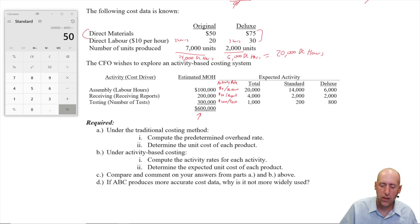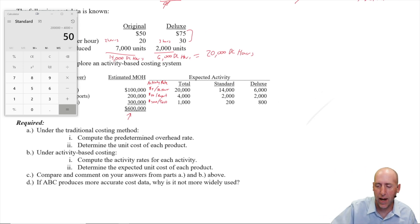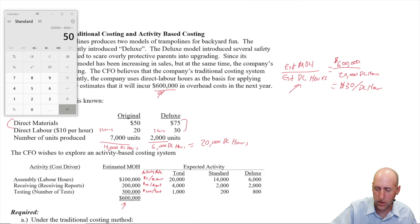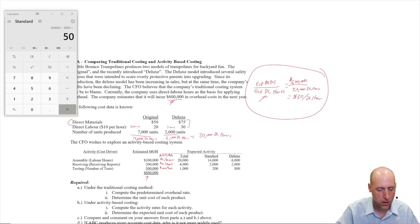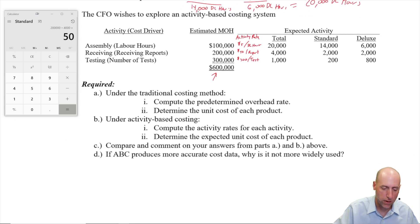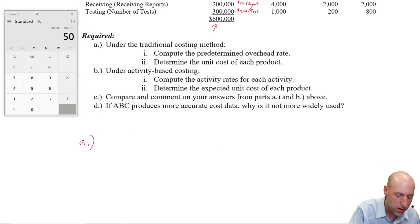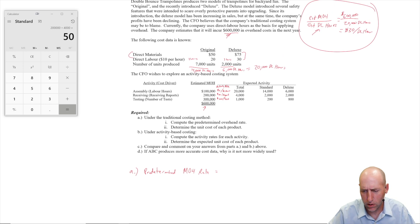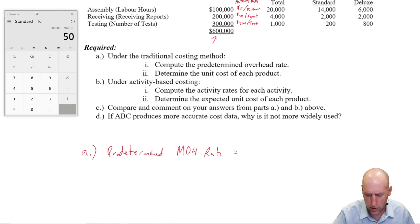Under the traditional costing method, compute the predetermined overhead rate. Aha, we've done it. We've answered that portion of the question. It's 30 bucks an hour. And it says, determine the unit cost of each product. Okay, we haven't done that. So let's solve that. So part A, the predetermined overhead rate is $30 per direct labor hour.